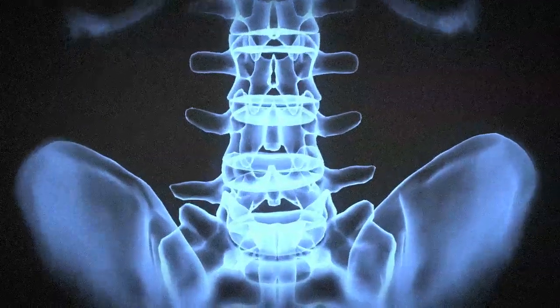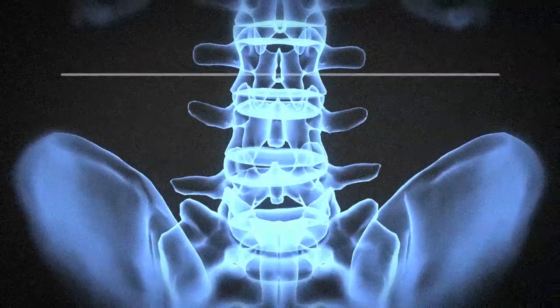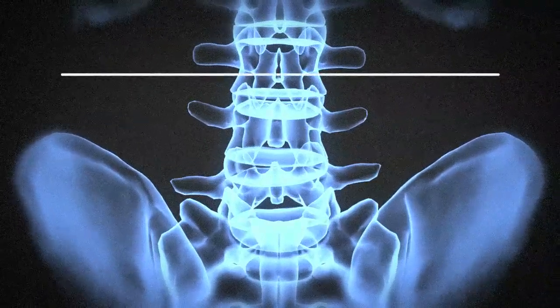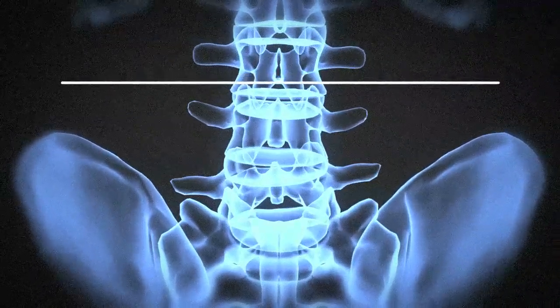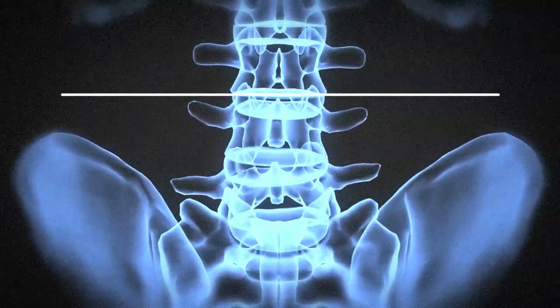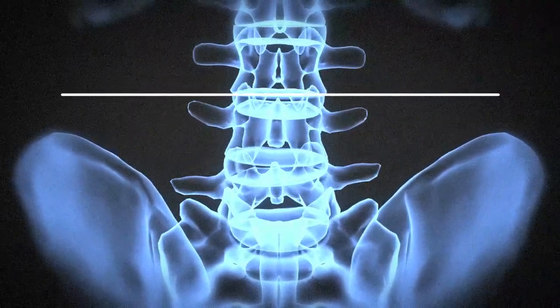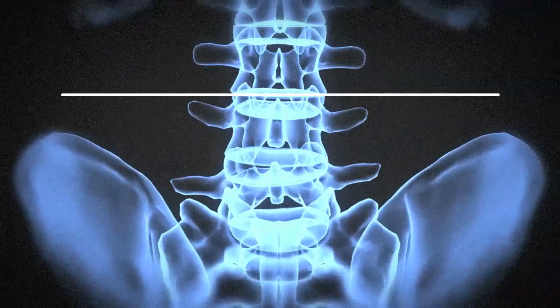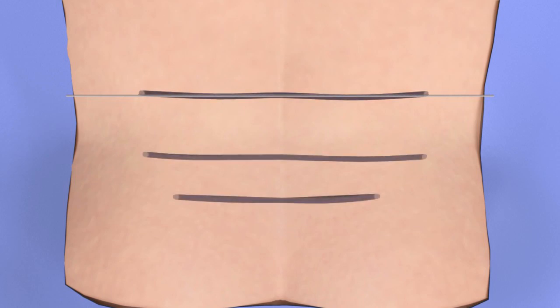To begin, use AP fluoroscopy to center the guide wire across the cephalid most pedicles of the motion segment to be instrumented. Using a surgical marker, indicate this line on the patient's skin.